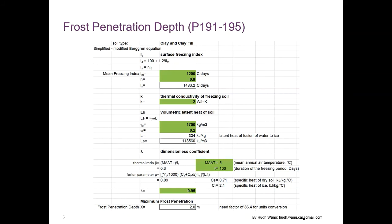For example, if the site consists of clay and a clay tail, the long-term mean air freezing index is 1200 degree days. Then we can get the design freezing index based on this correlation. And then using an n-factor of 0.9, we can convert the design air freezing index into a design ground surface freezing index.